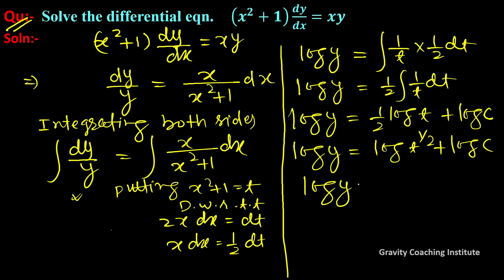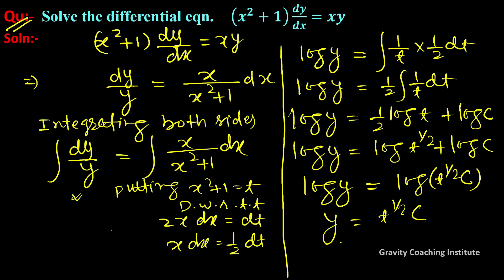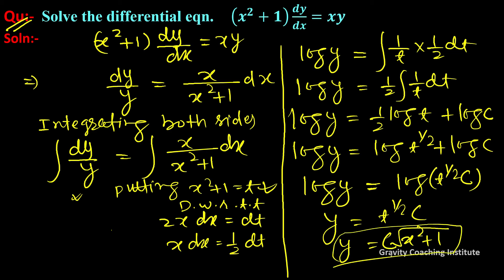So y = c · t^(1/2). Substituting back t = x² + 1, we get y = c√(x² + 1), which is the required answer.